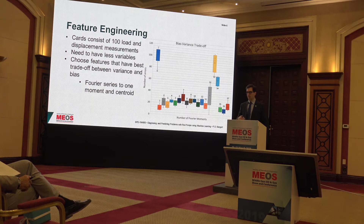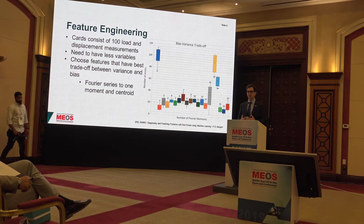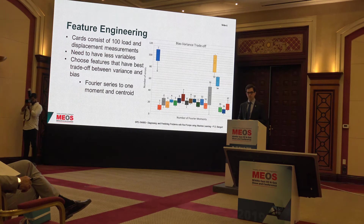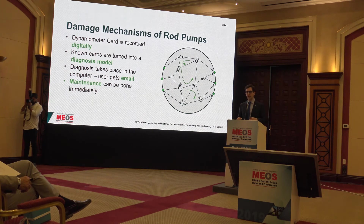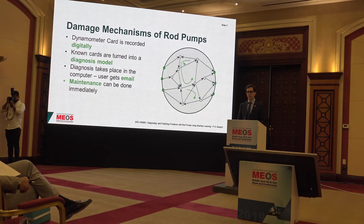The Fourier series represents a periodic curve, and you cut it off at the first of the Fourier moments — details are in the paper. Combined with the centroid and the location of where that card is in load and displacement space, this gives you all the information you need. The 200 numerical values are now compressed to just five numerical values that characterize a card sufficiently accurately to determine what damage mechanism is present. We measure the card in reality, reduce it by dimensionality reduction into this five-dimensional Fourier space, compute the damage mechanism, and notify the appropriate person.